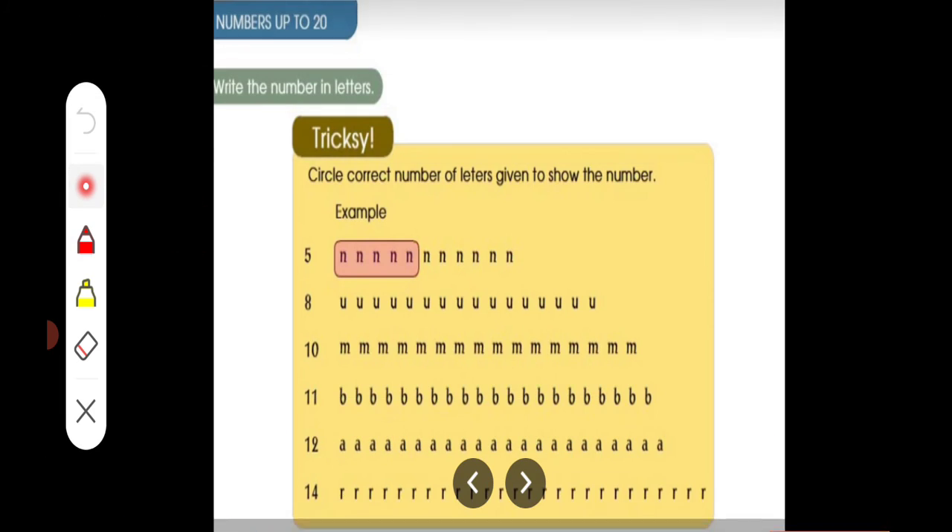What is this? This is trackies. Yes. Very good. See, you all are understood by telling only. See, circle correct number of letters given to show the number. How much number he was given here? Example. See here. Five. So, what he was done here? He was circled the five numbers. 1, 2, 3, 4, 5.